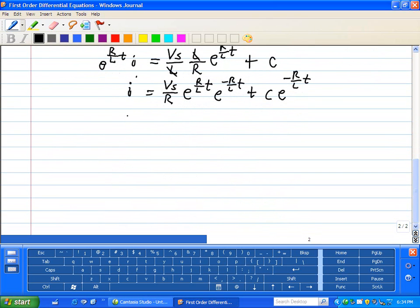Now, we have i, this simplifies to Vs over R, plus c, e to the minus R/L times t. So that's our general solution with an arbitrary constant c, as a result of this integration.